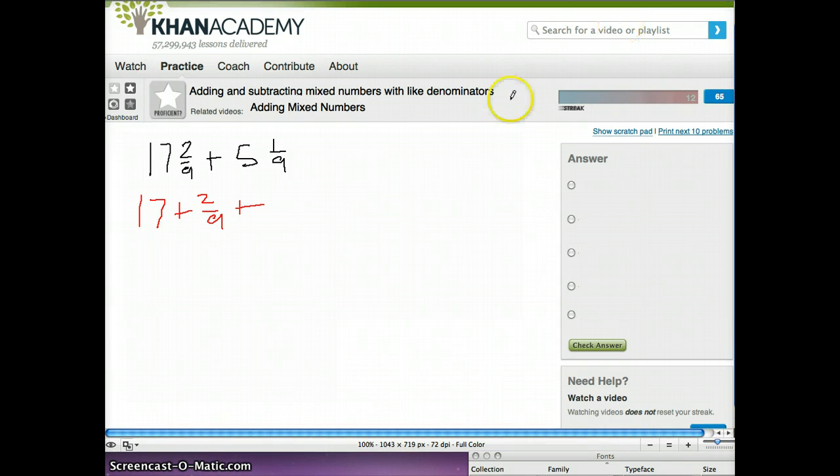and if I swap the colors here, 5 plus 1 ninth, and then you kind of rearrange it a bit and say, well, let's actually just put the big numbers together.